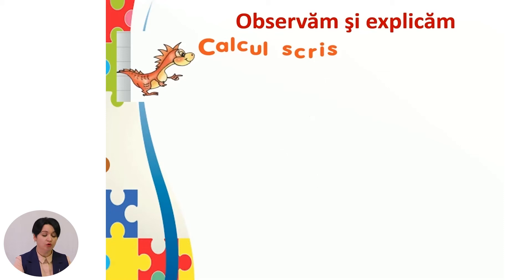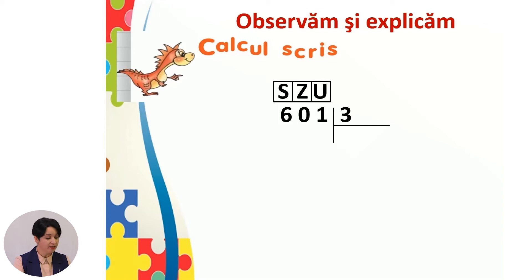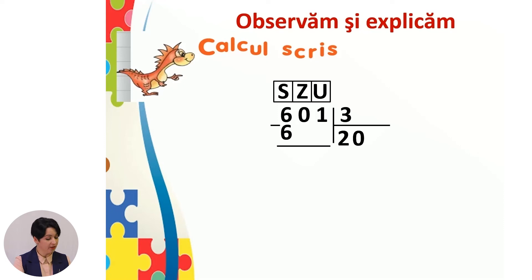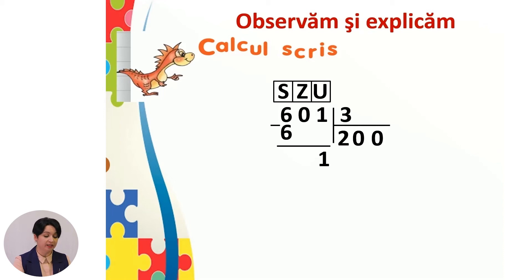Vă invit să observați ultimul caz de împărțire: câtul numerelor 601 și 3. Împărțind sutele: 600 ÷ 3 = 200. Verificăm: 200 × 3 = 600. La zeci avem cifra 0: 0 ÷ 3 = 0. Coborâm cifra unităților 1. La împărțirea unităților obținem câtul 0, deoarece 1 ÷ 3 = 0, restul 1. Am obținut câtul 200 și restul 1. Verificăm: restul 1 este mai mic decât împărțitorul 3. Dacă înmulțim câtul 200 cu 3 și adunăm restul 1, vom obține împărțitul 601.